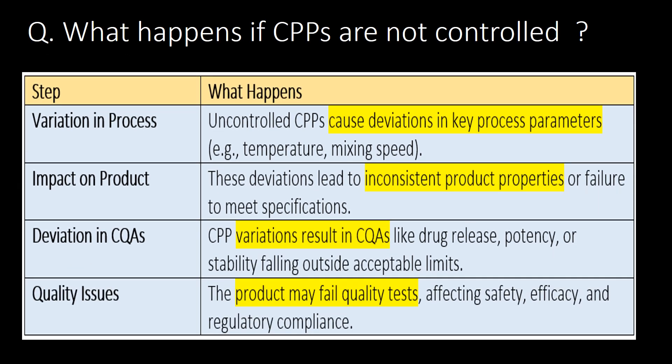What happens if CPPs are not controlled? If CPPs are not controlled, it can cause deviations in key process parameters, lead to inconsistent product properties, cause variations resulting in CQA failures, and ultimately cause product failure.